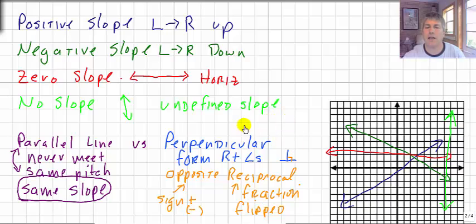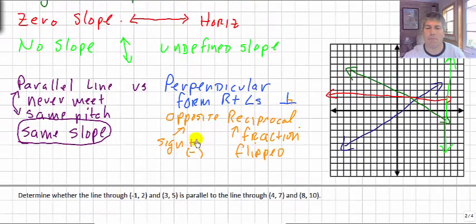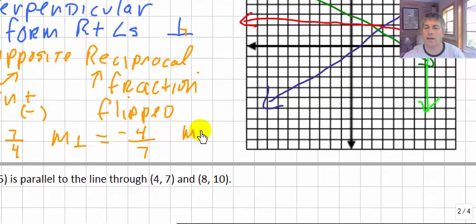So perpendicular lines, if we have lines with a couple of slopes, so if one line has a slope of 7 fourths, the slope of the perpendicular line must equal negative 4 sevenths. They have opposite signs, one is positive and one is negative, and we flip the fraction, 7 fourths becomes 4 sevenths. So if one line had a slope of 2, the slope of the perpendicular line would be negative 1 half. So if one line had a slope of 3, the slope of the perpendicular line would be negative 4 half.